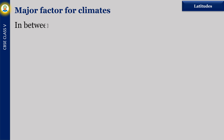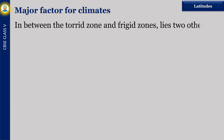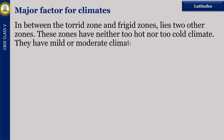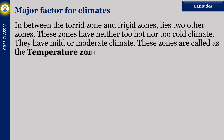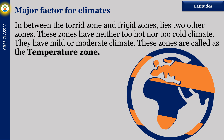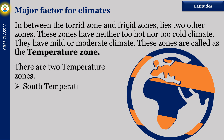In between the Torrid Zone and the Frigid Zones lie two other zones. These zones have neither too hot nor too cold a climate. They have a mild or moderate climate. These zones are called the Temperate Zones. There are two Temperate Zones: the South Temperate Zone and the North Temperate Zone.